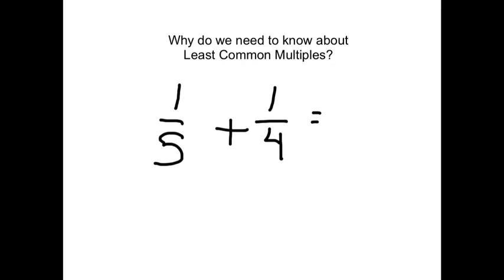So, if I skip count by 5, that would be the multiples of 5. That would be 5, 10, 15, 20, so on. If I skip count by 4, that would be 4, 8, 12, 16, 20, and we see that the first number that's the same is 20.